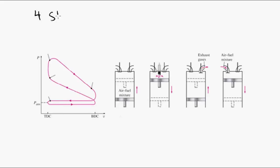This is the four-stroke cycle for a spark ignition engine. You can see the PV diagram on the left, and on the right the four stages or the four strokes. So first, we have the compression stroke.